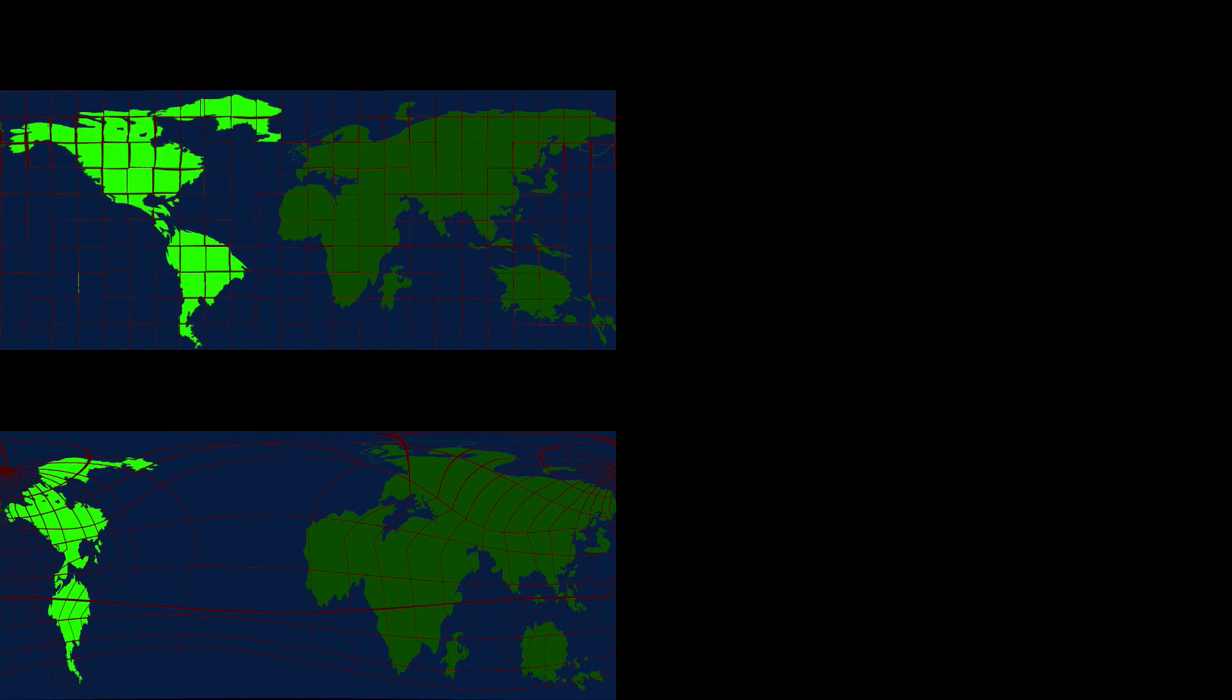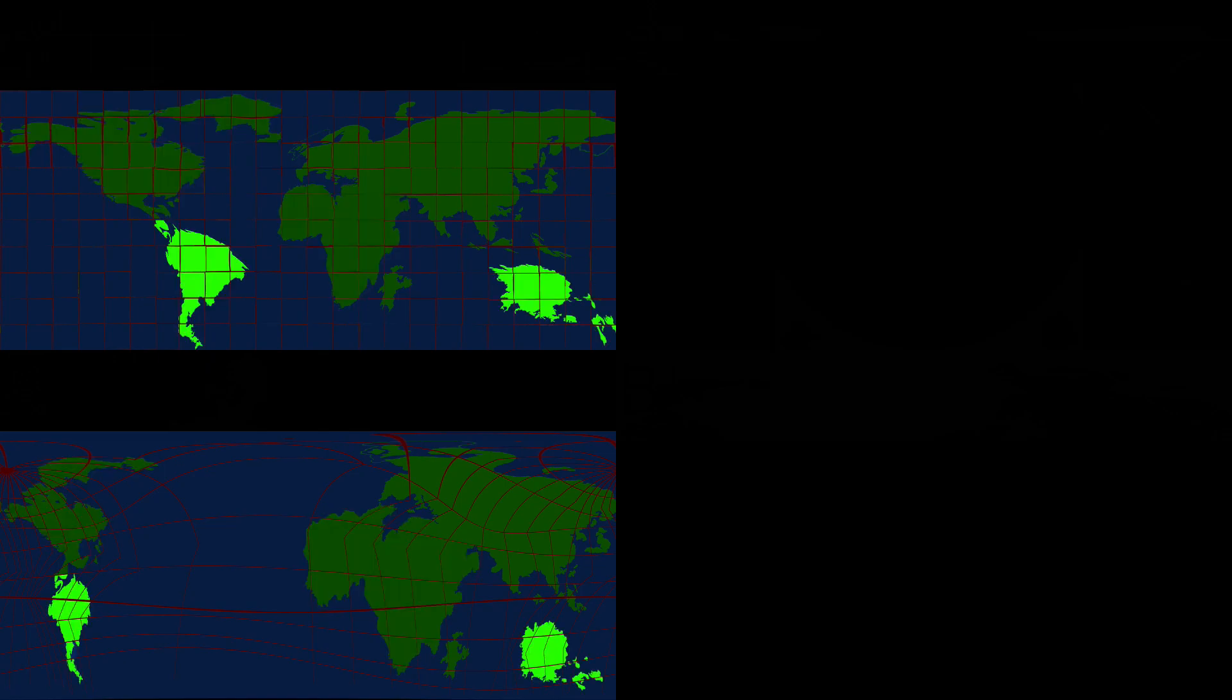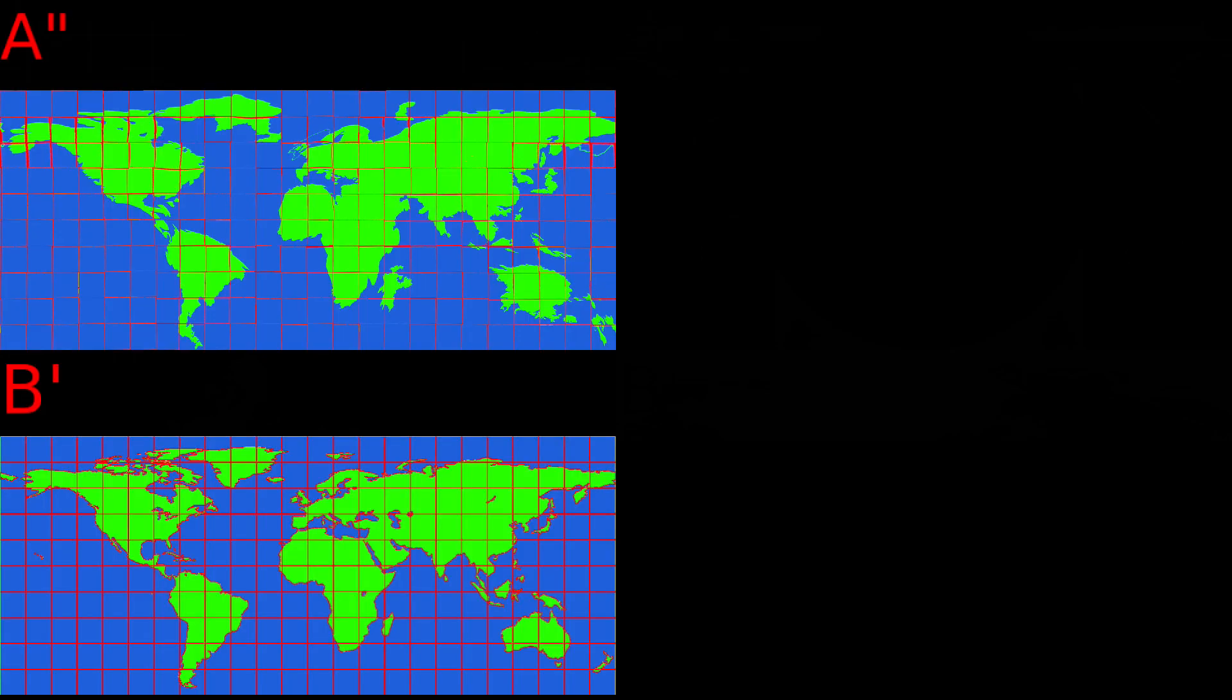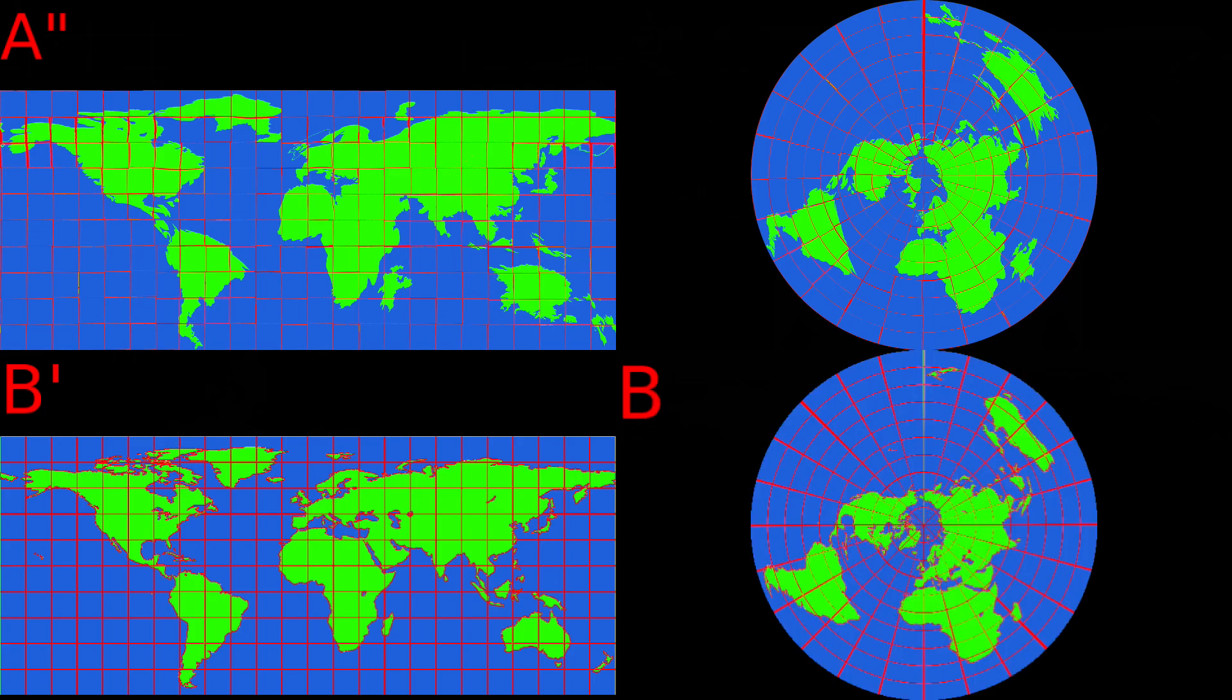Notably, the Americas have increased in size, Africa has shrunk slightly, South America and Australia have moved to the right, and Europe has moved to the left, all in accordance with straightening the zigzagging longitudes. Converting A double prime back to polar verifies equivalence between the original polar projection B as well.